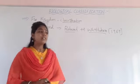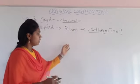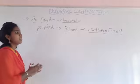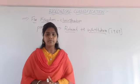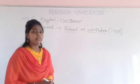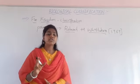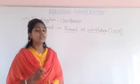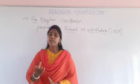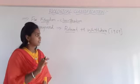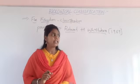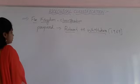Many organisms do not belong to the kingdom Plantae or the kingdom Animalia. So R.H. Whittaker introduced the five kingdom classification. Those five kingdoms are: Monera, Protista, Mycota (which relates to fungi), Plantae, and Animalia.